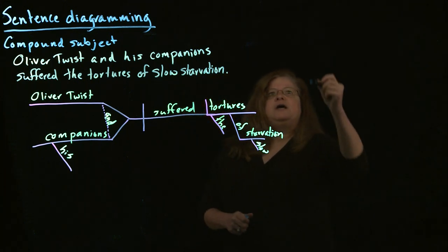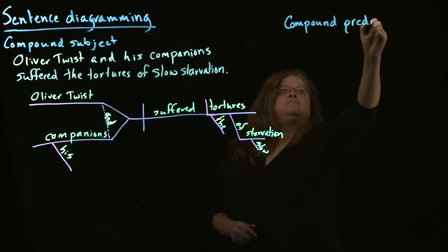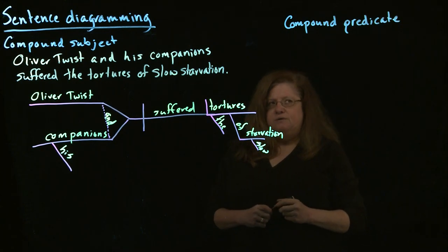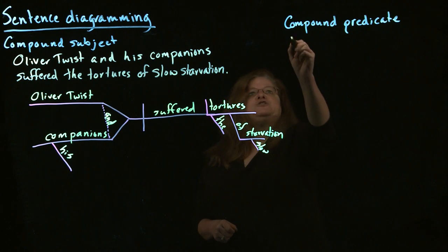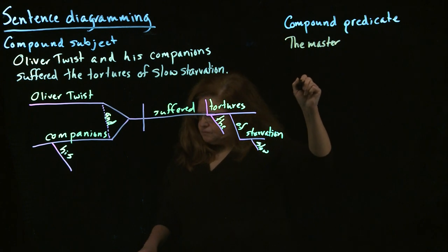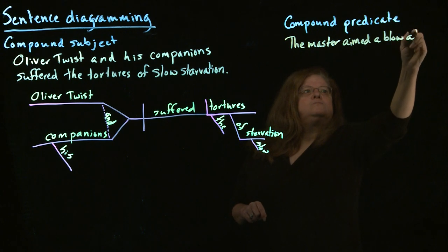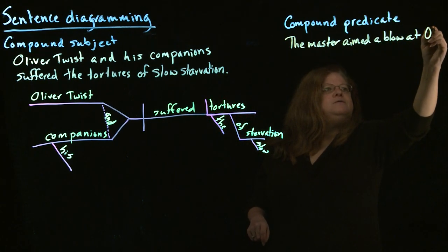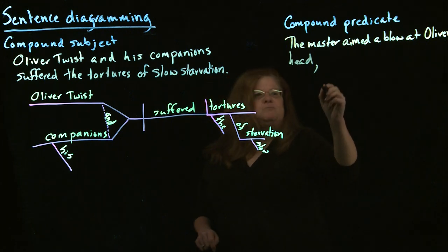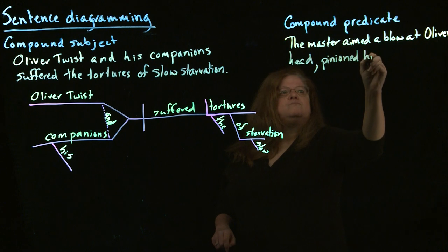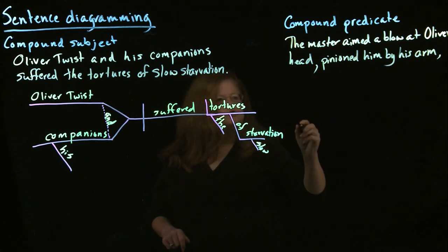Now, we may also have a compound predicate. A compound predicate will have one subject but multiple objects. So if I have something like the master aimed a blow at Oliver's head, pinioned him by his arm and shrieked aloud for the beetle.